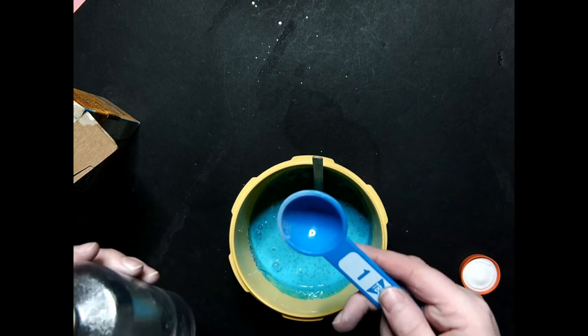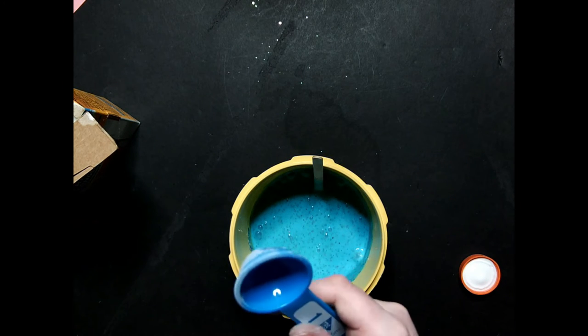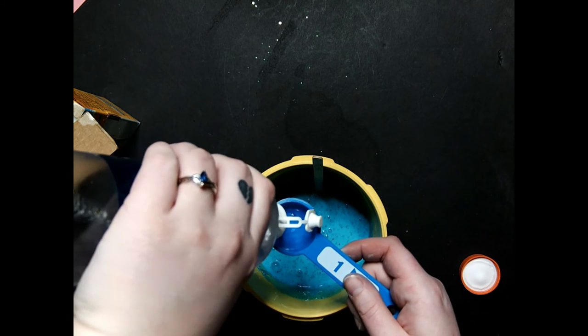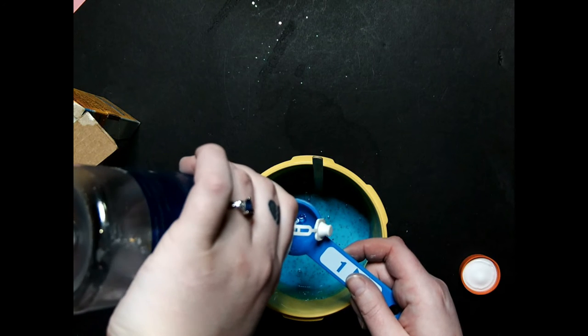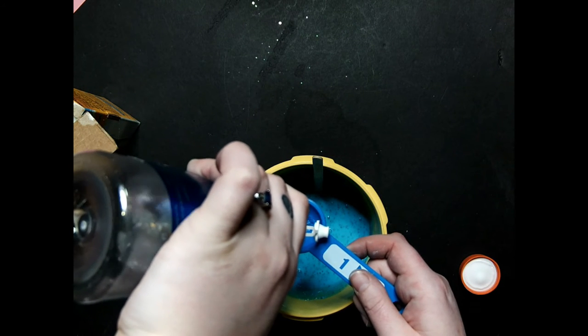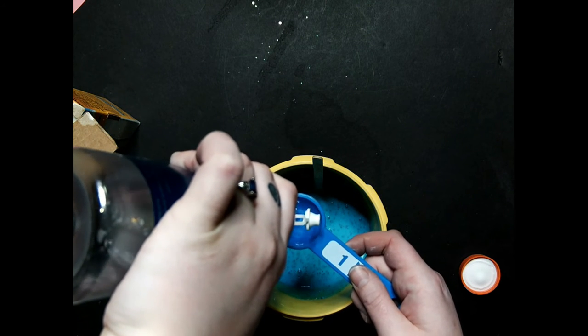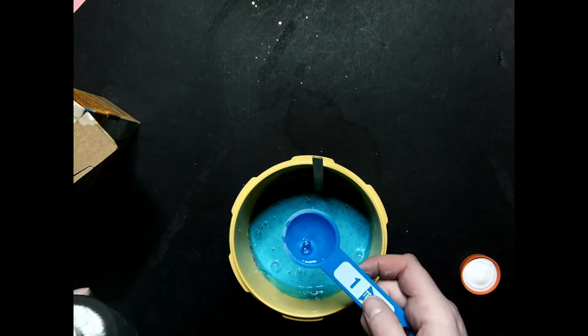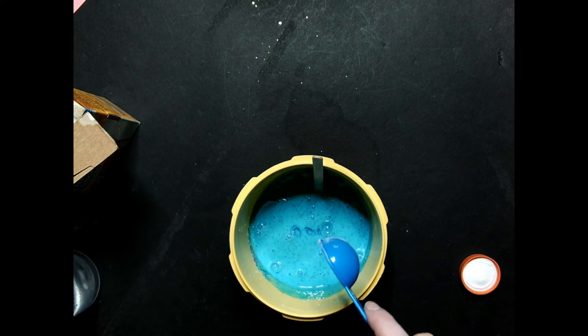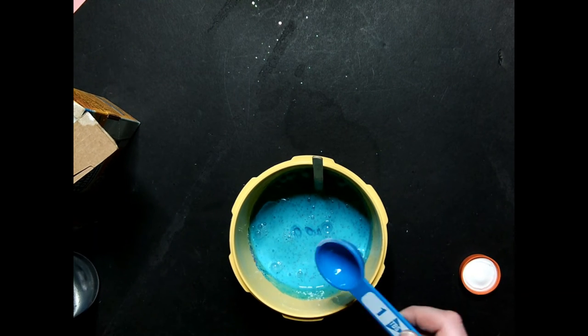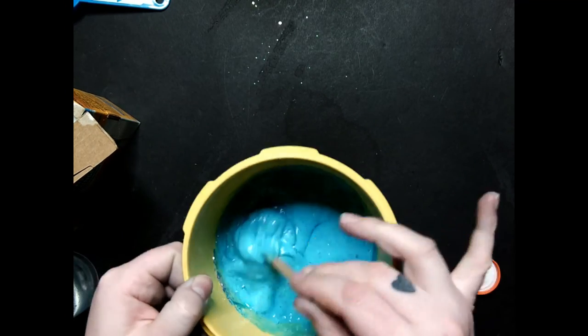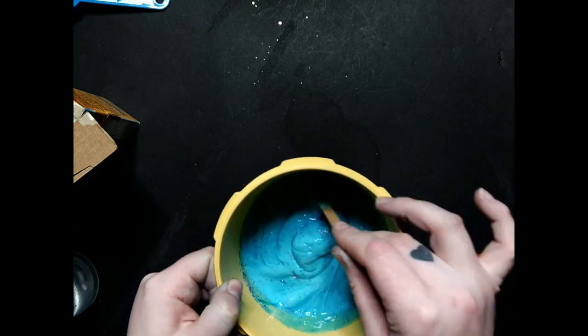Now we're going to take a tablespoon of contact solution. And that tablespoon is going in. And this is what's going to react with the glue to help make the slime. And you just start stirring. And already you can see that it's starting to make the slime.